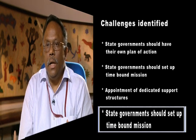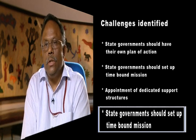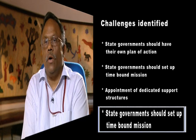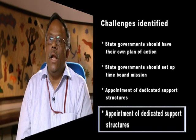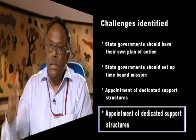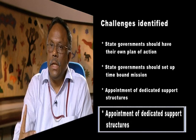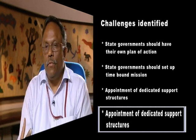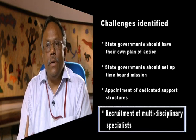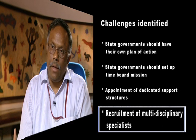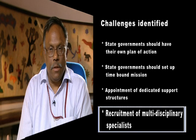Keeping in mind the core NRLM principles of poverty eradication through institutions of the poor, the state government has a seven-year plan of action and also specifies what it will do in the first year. The first and foremost requirement is a state government developing its own action plan, which also means that every district will prepare its action plan.